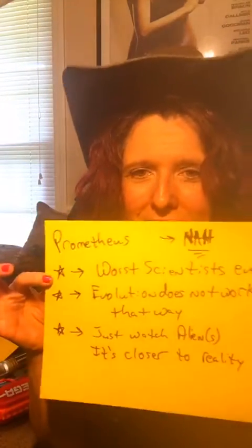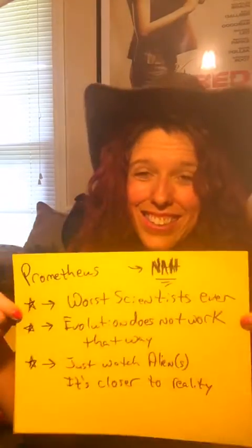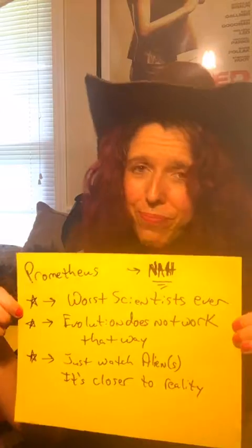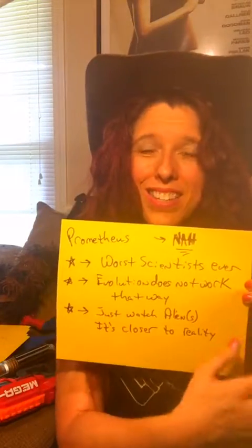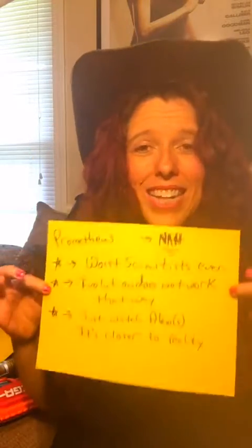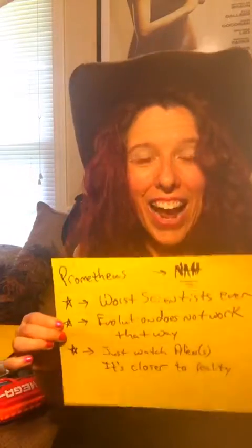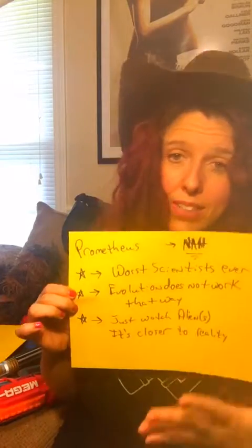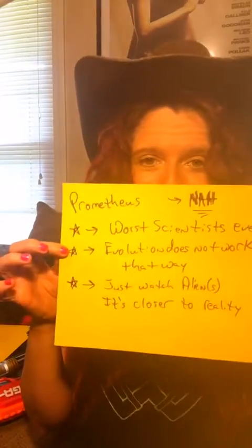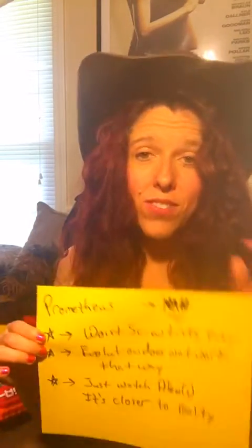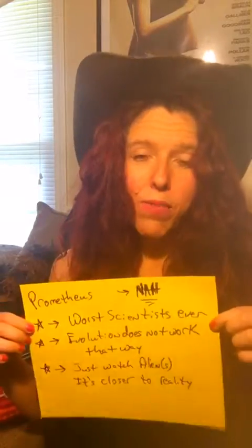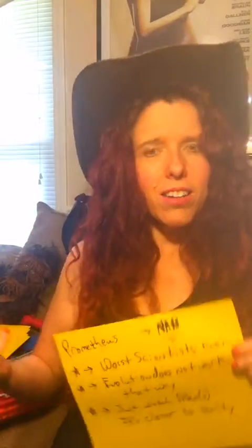I want to talk about Prometheus — this film is what I like to call the worst scientists ever. At the end of Prometheus, a xenomorph is born — one species transforming into a completely different species. That is not how evolution works; you don't just get a brand new species that different from a previous one. And this was a trillion-dollar expedition. The scientists get there, find the atmosphere is 'just like Earth,' and immediately take off their helmets — and I'm sitting there going, do they not know there could be microbes, bacteria, viruses?